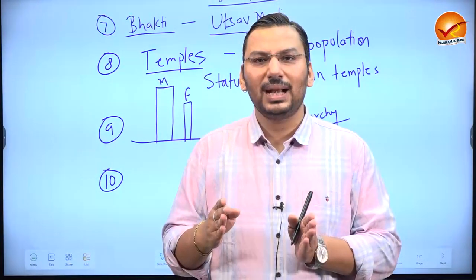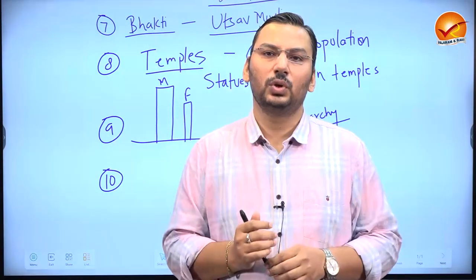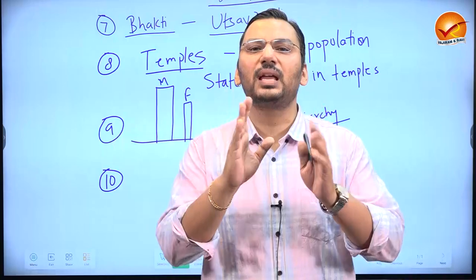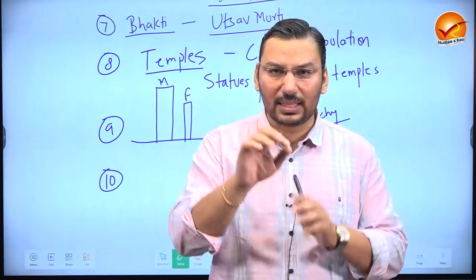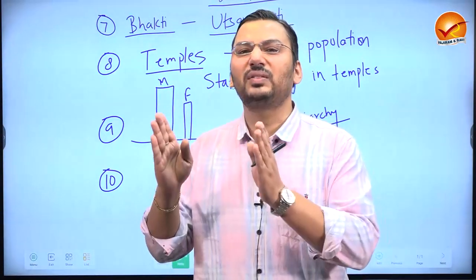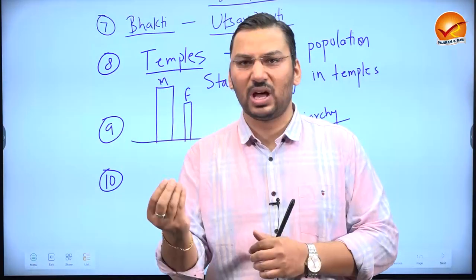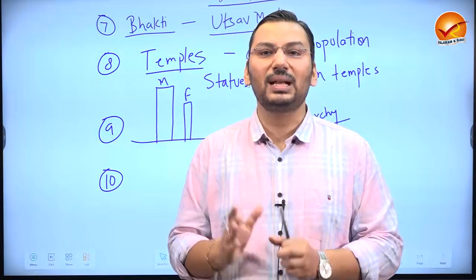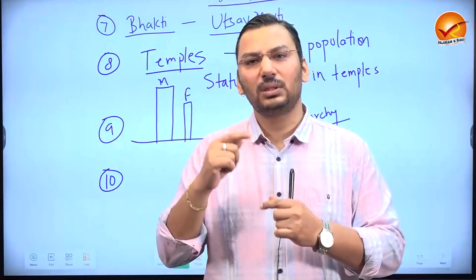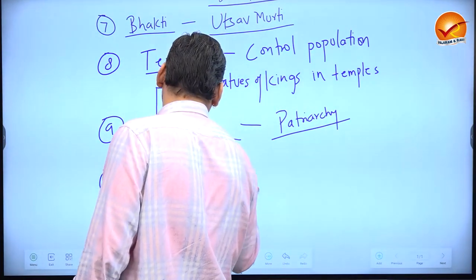In eastern India — Odisha, during late Pala and early Sena dynasties — sculpture indicates clashes between Brahmanism and Buddhism. In late Pala architecture, Buddha is sculpted exactly like Vishnu. You can search 'late Pala sculpture Buddha' and see that the Buddha is modeled exactly on a Vishnu avatar. Either this shows acculturation — Buddha accepted as the ninth avatar of Vishnu by Buddhists as well — or it signals declining Buddhism trying to legitimize itself by aligning with Hinduism.